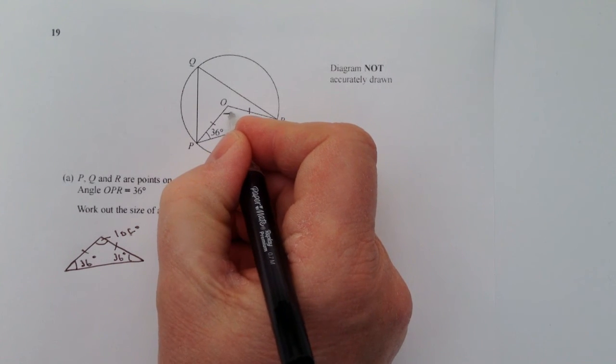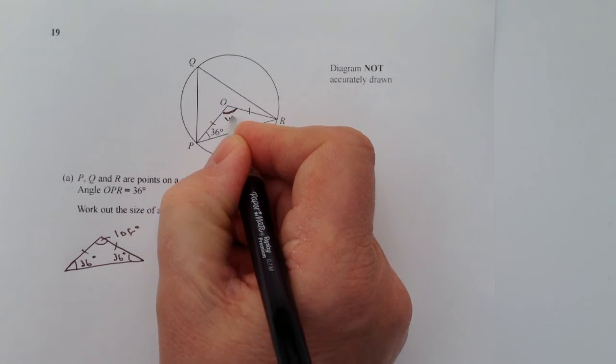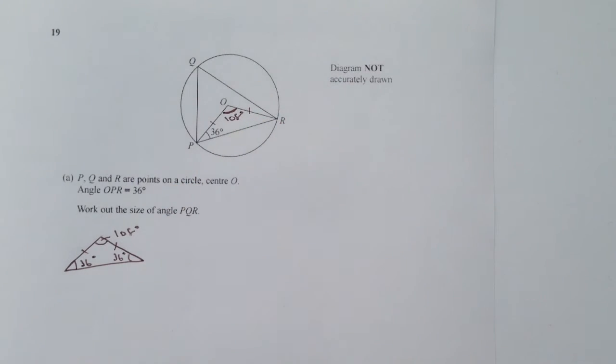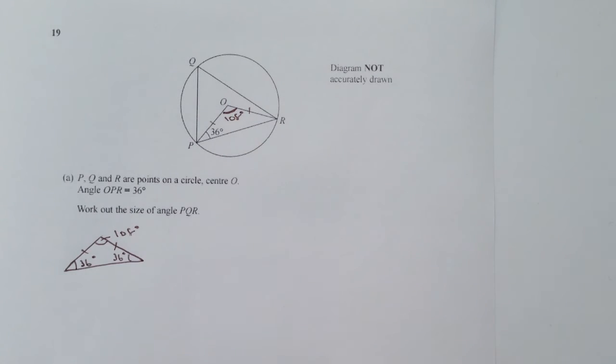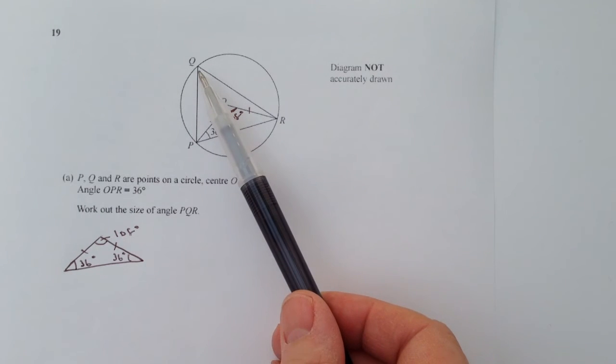Okay, so the thing that you need to know is the circle theorem that says that the angle at the center of the circle is twice the angle at the circumference. So in other words, what we're saying is the angle PQR, which is what they're asking us to find...